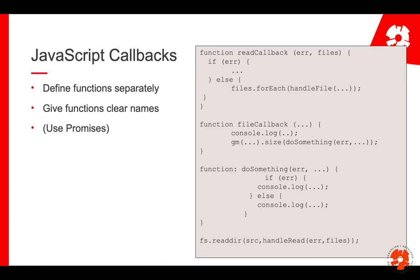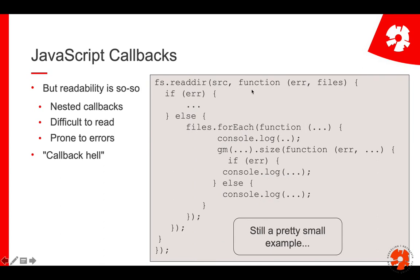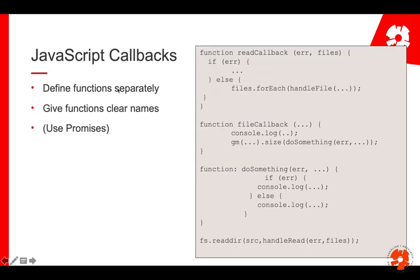There are several ways to solve that. A simple one is to not use all the inline functions. What you see here is that we define the function within the function call — it's an anonymous function with no name. One way is to define them separately: here's a function called readCallback, here's a function called fileCallback, and so on. Then later we simply use them — handle read, handle file — using the different callback names. This way, when the callback is put into the function parameter, we know roughly what it does, and the nesting becomes less problematic.